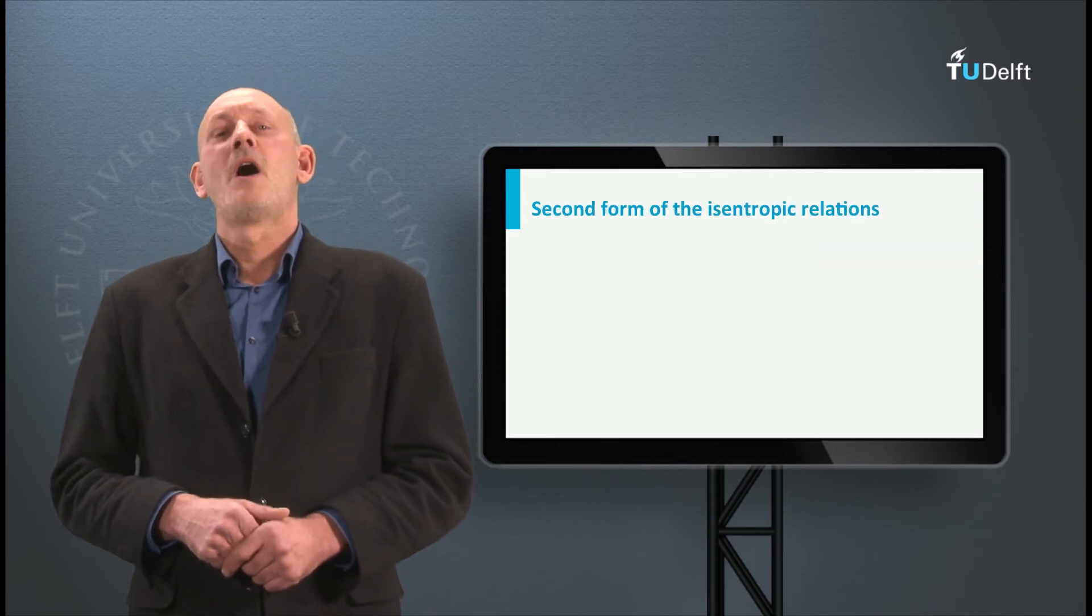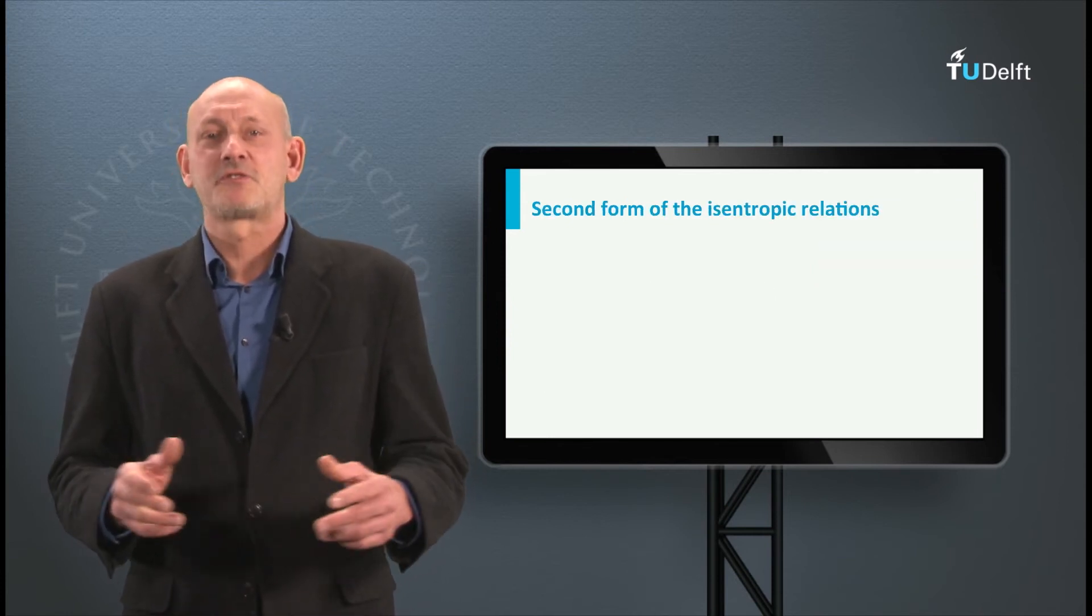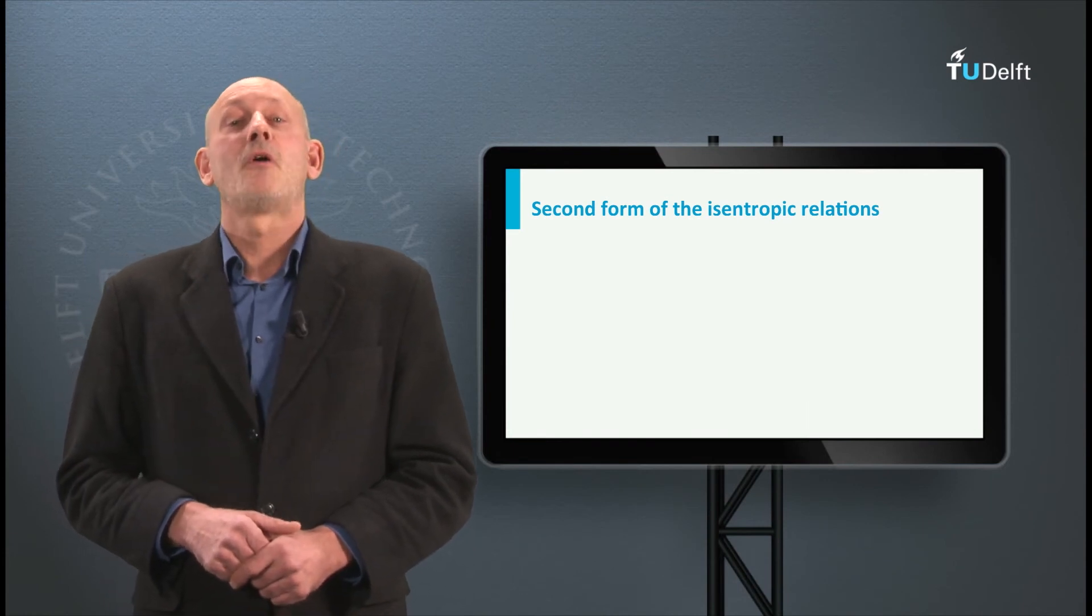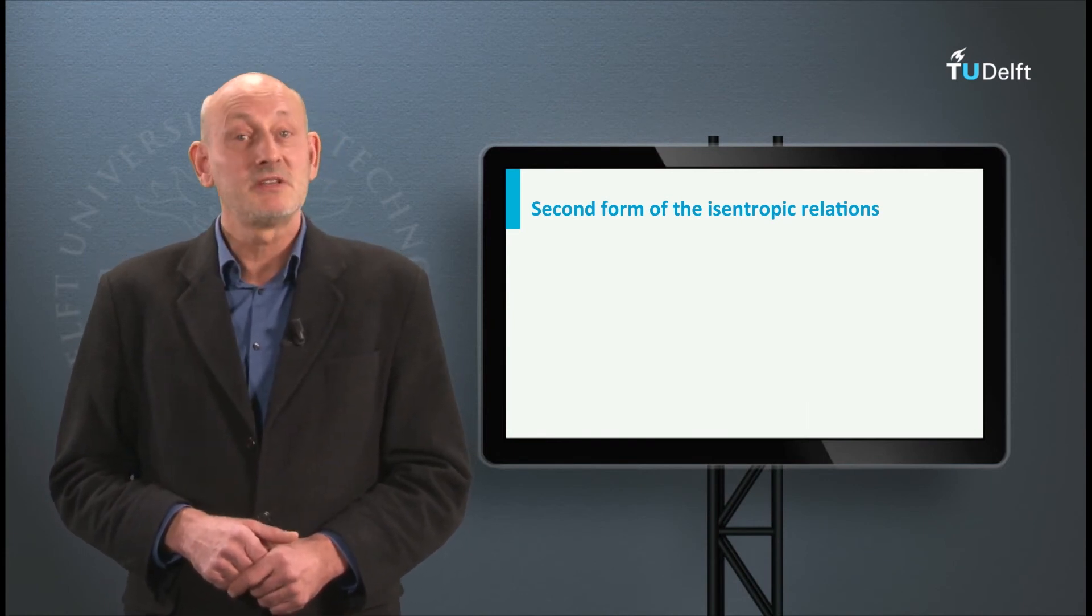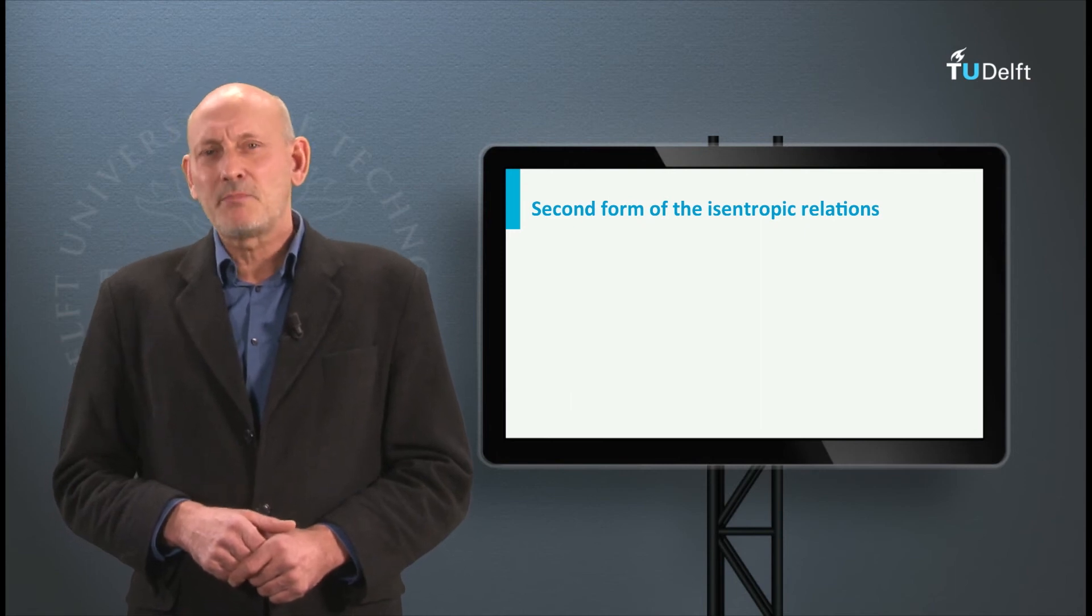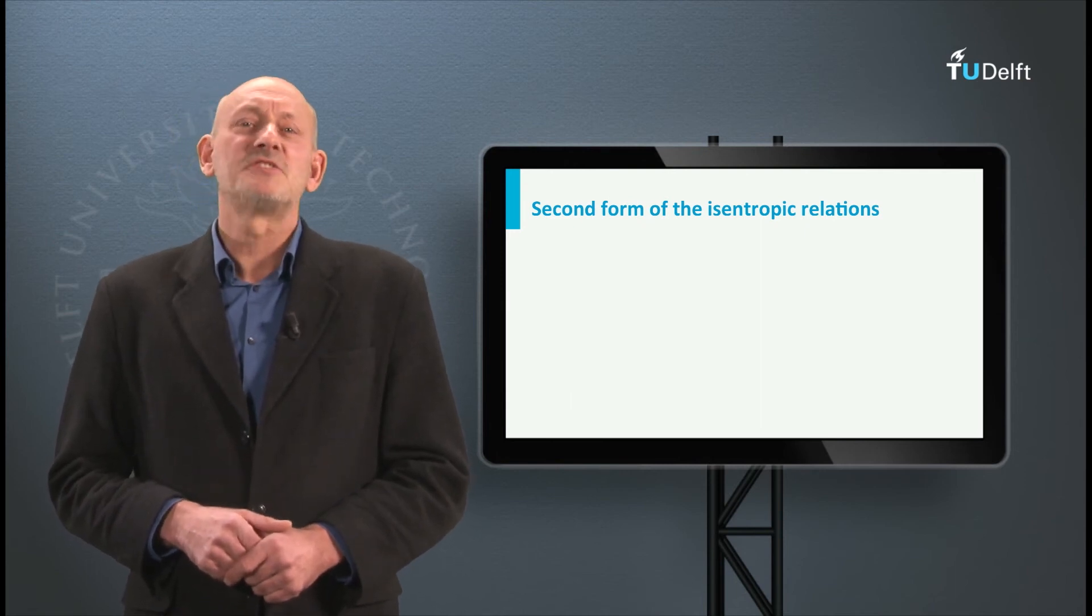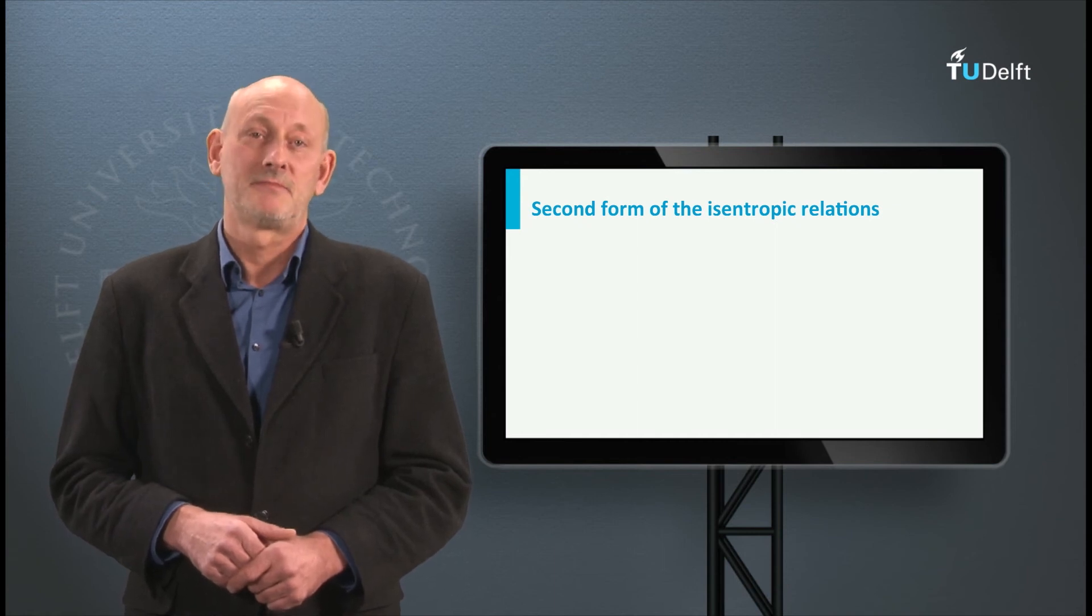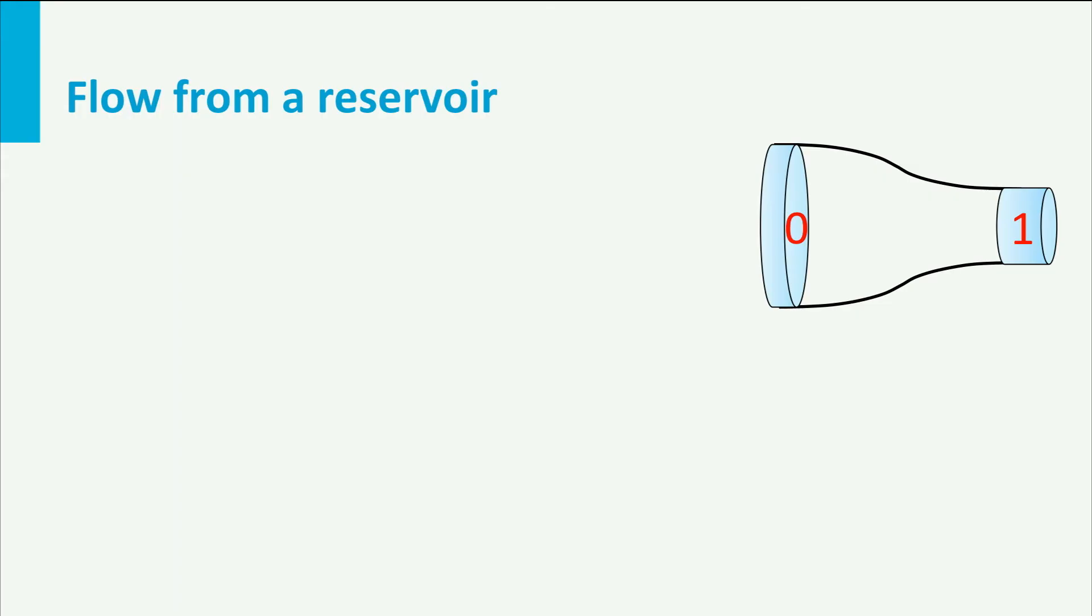Compressible flow often involves flow from a reservoir or, such as in the stagnation point on the leading edge of a wing, a flow where at some point the velocity is zero. For this type of flow the isentropic relations can be made much easier and directly related to the Mach number. Suppose we have a reservoir at station 0 and at the exit of this channel we have station 1.